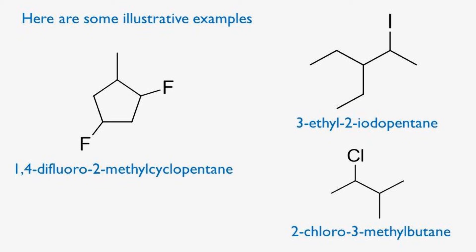Let's try the bottom right. We can number either from right or from left and we still get number two for the first substituent. Therefore, we number from left to right, because in this case the chloro comes before methyl in the alphabet. Therefore, it's 2-chloro-3-methylbutane.